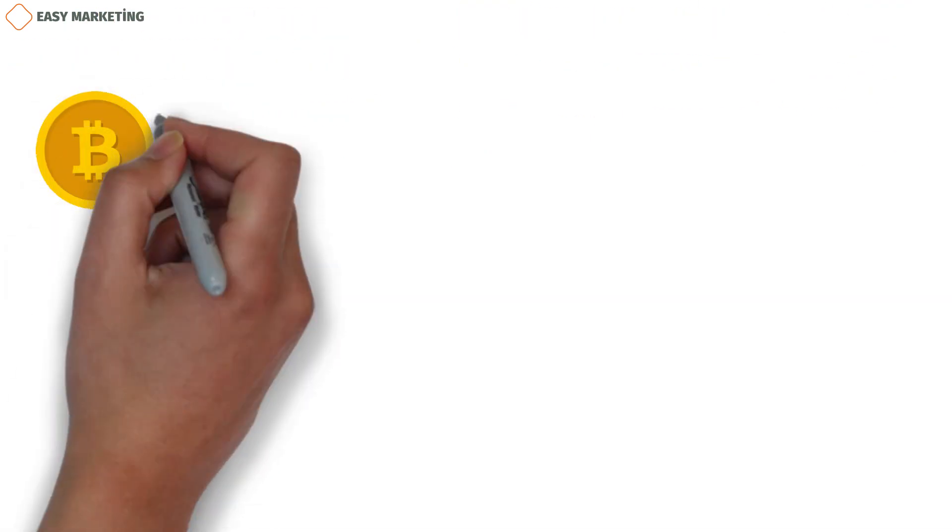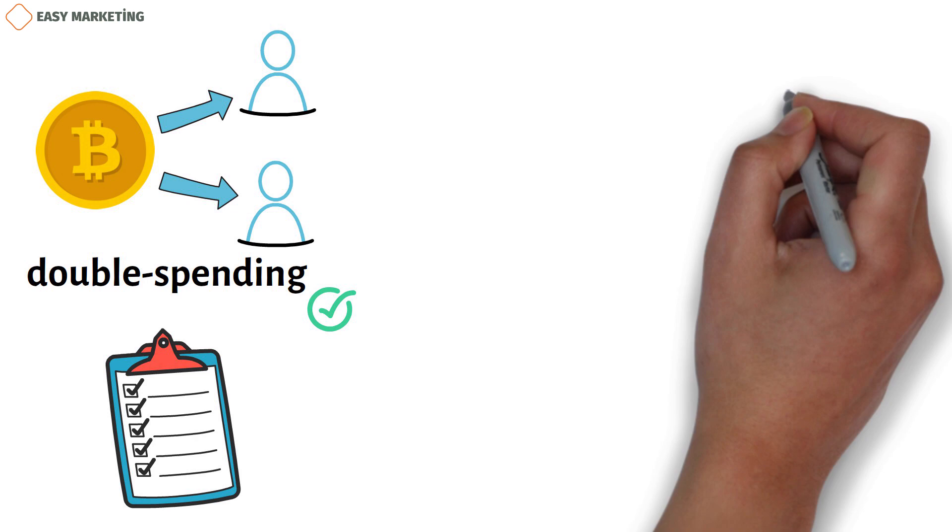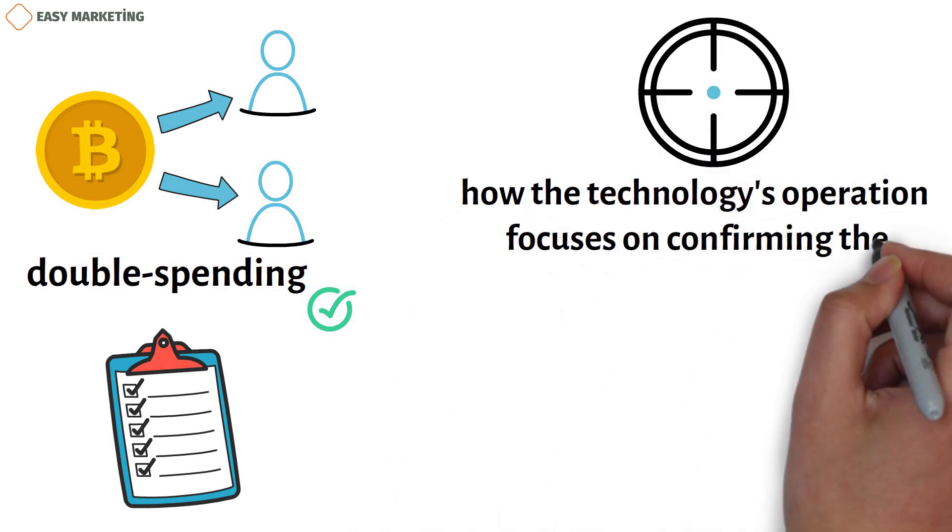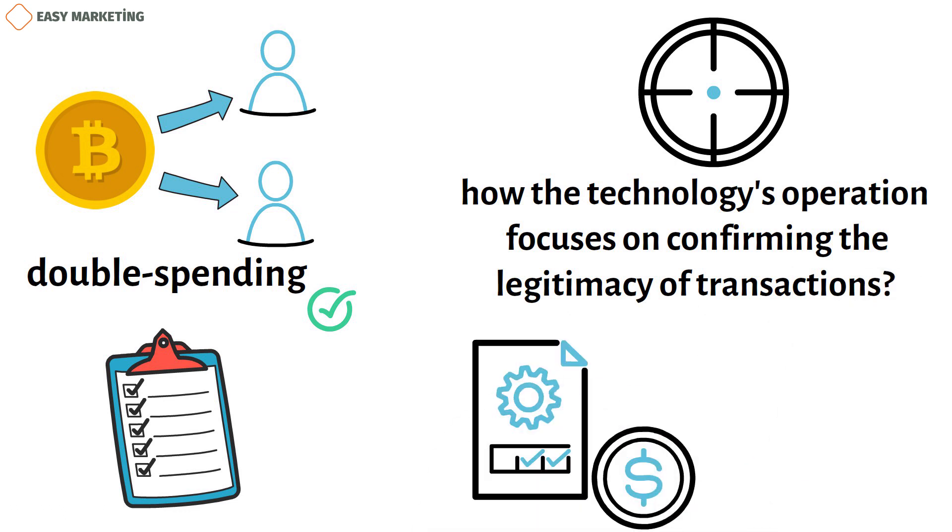Bitcoin solved the double spending issue and established a new standard for conducting financial transactions and exchanging value in virtual spaces. Also, the impact of blockchain on marketing would concentrate on how the technology's operation focuses on confirming the legitimacy of transactions. The public blockchain transaction records cannot be altered since they are sequentially organized in blocks with timestamps.